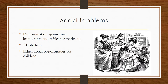Some examples of these social, economic, and political problems — starting with social problems: some of the things that Progressives wanted to change was discrimination against new immigrants and African Americans. They wanted to put an end to alcoholism, which was widespread during this time period, and they wanted to improve educational opportunities for children.